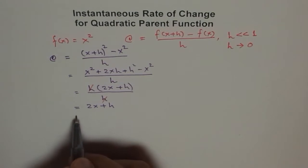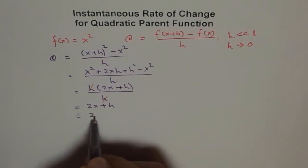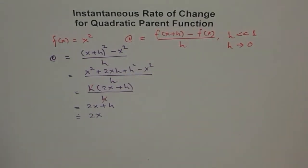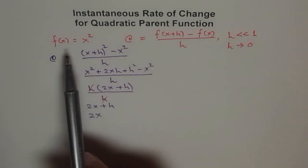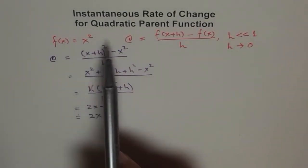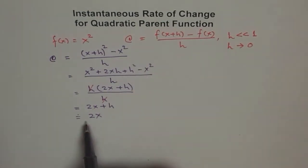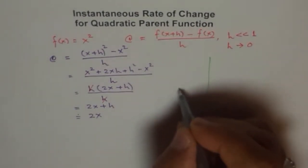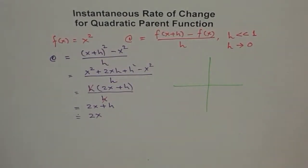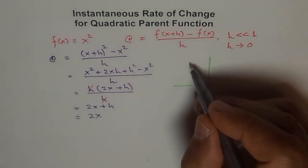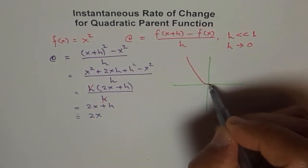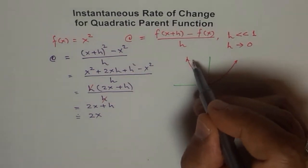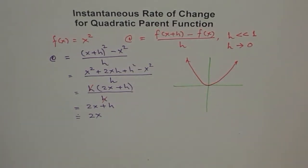Since h is very, very small, this can be approximated to 2x. So we see that for any quadratic function, the instantaneous rate of change is a line: 2x. If you sketch this on a graph, you will see that if your function f(x) = x² looks like a parabola, then at every point the instantaneous rate of change is given by the line y = 2x.